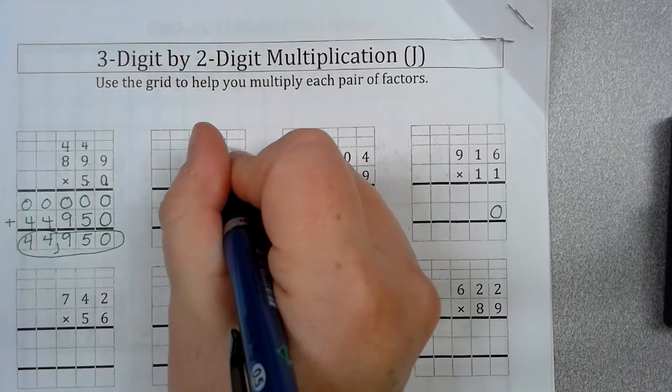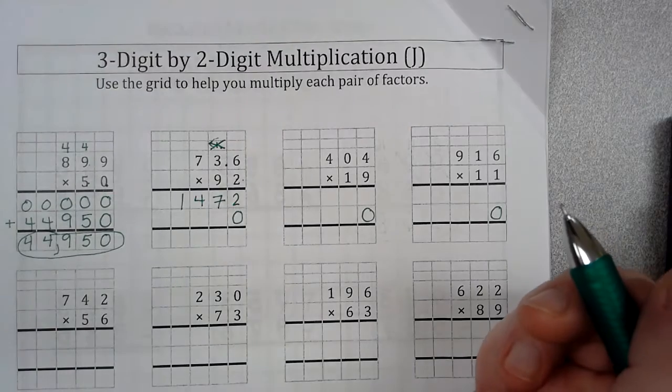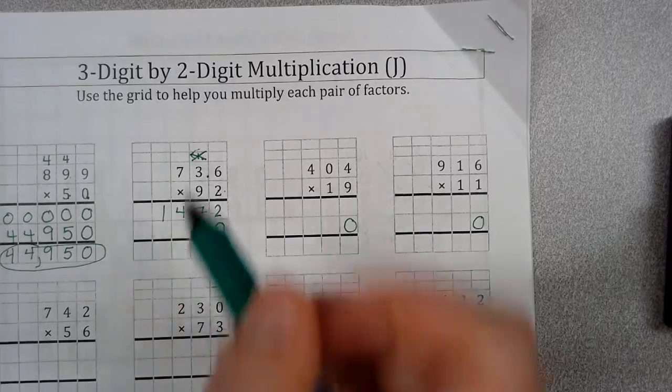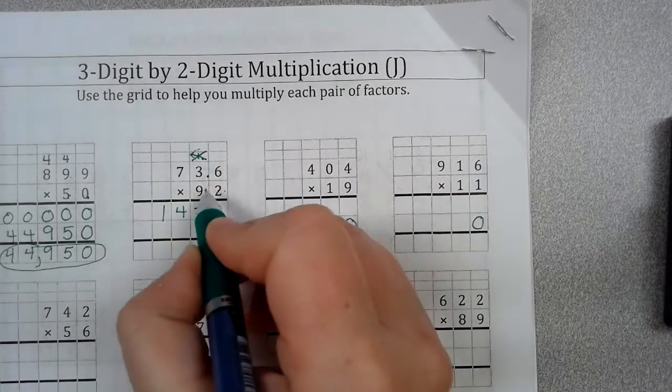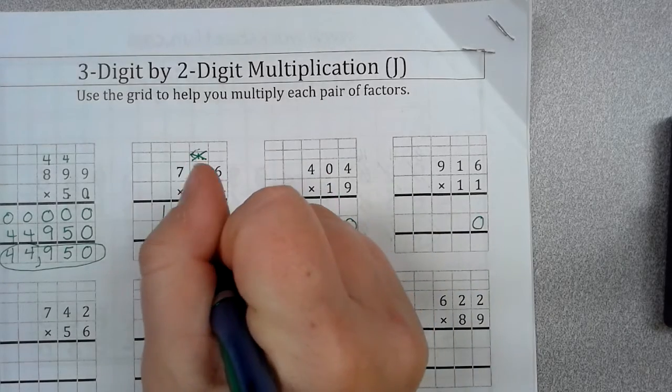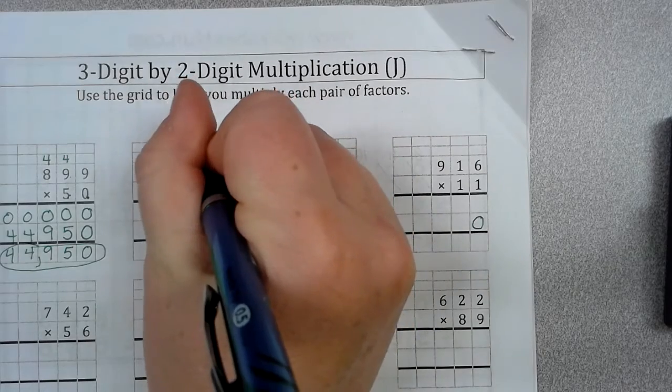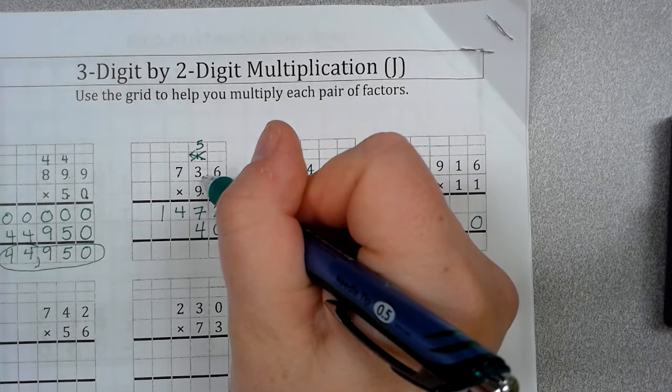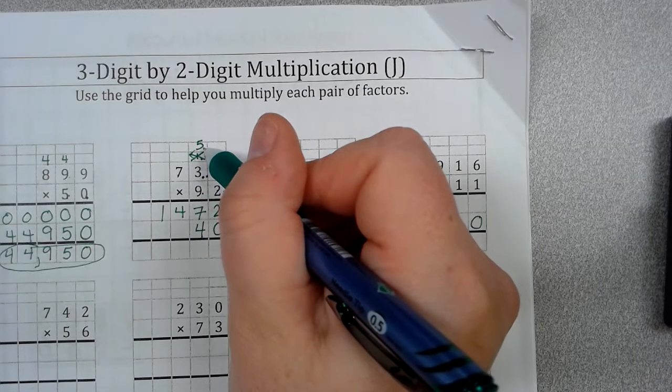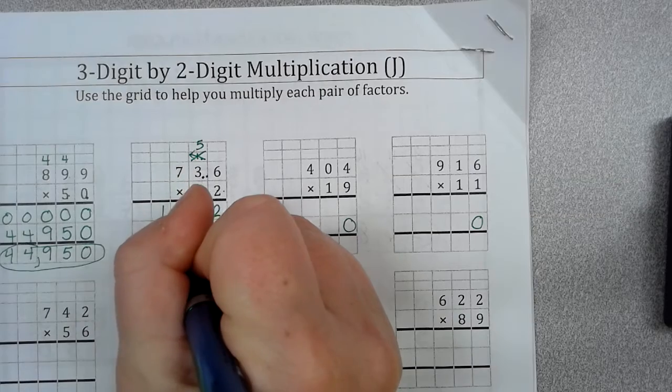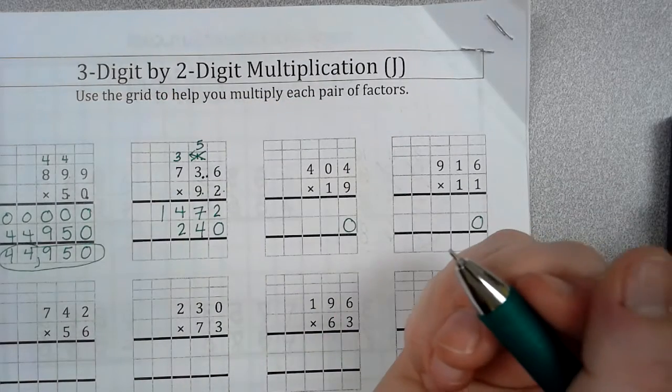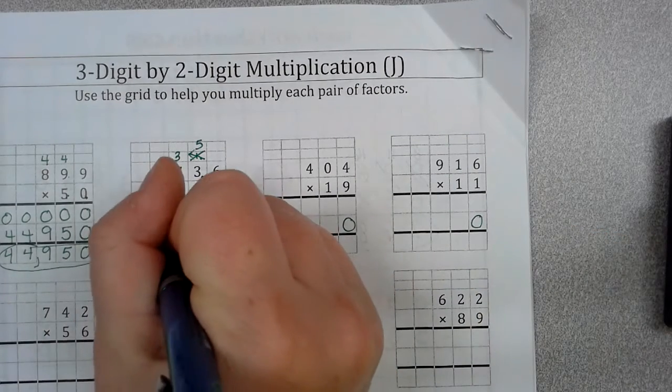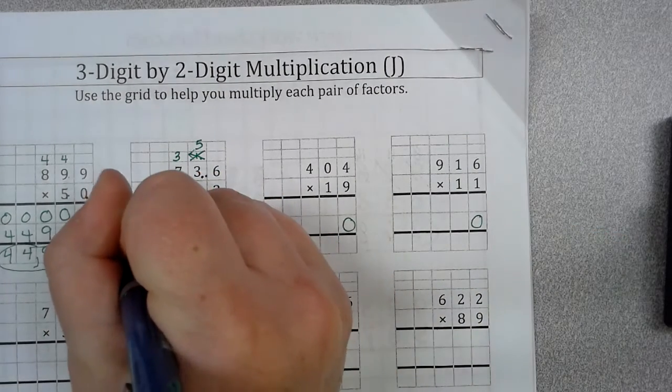Now, since I've already used this, I'm going to mark it out because I don't want to get confused. Now, I've already put my 0 down. So, I'm going to continue working. 9 times 6 is 54. So, put my 4 here. Carry my 5. 9 times 3 is 27. 9 times 7 plus 5 is 32. 9 times 7 is 63 plus 3 is 66.